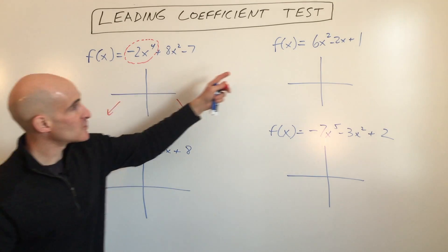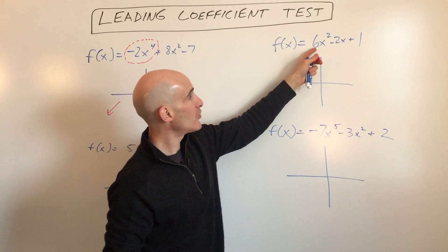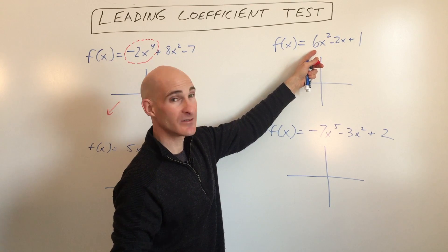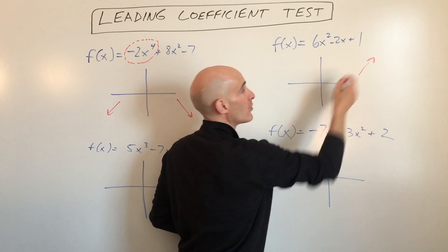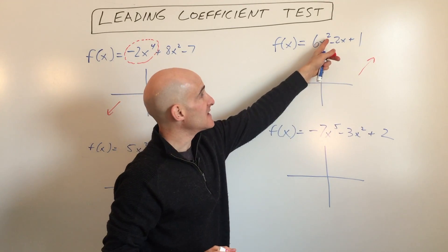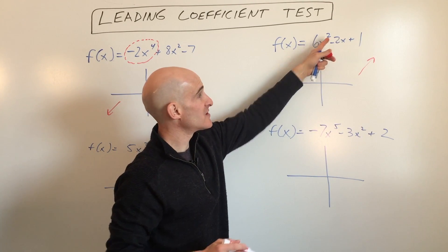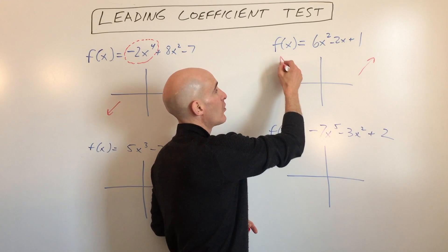Let's go over to the next one here. This one—notice the leading coefficient's positive, so that means as x increases, this is going to go up to the right. It's an even degree (second degree is even), so that means it's going to go up to the left.